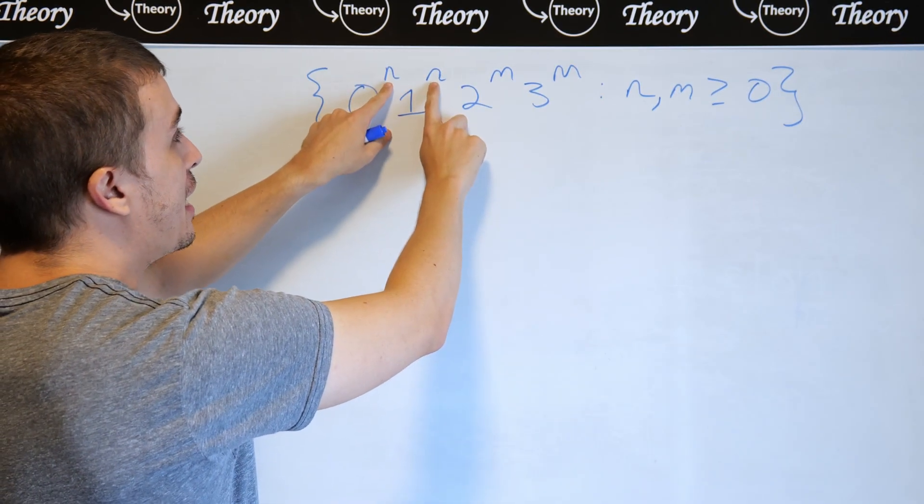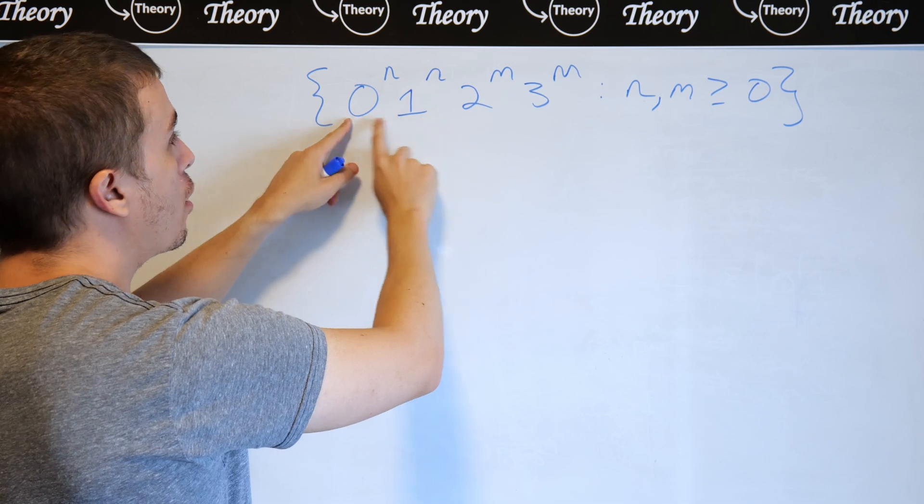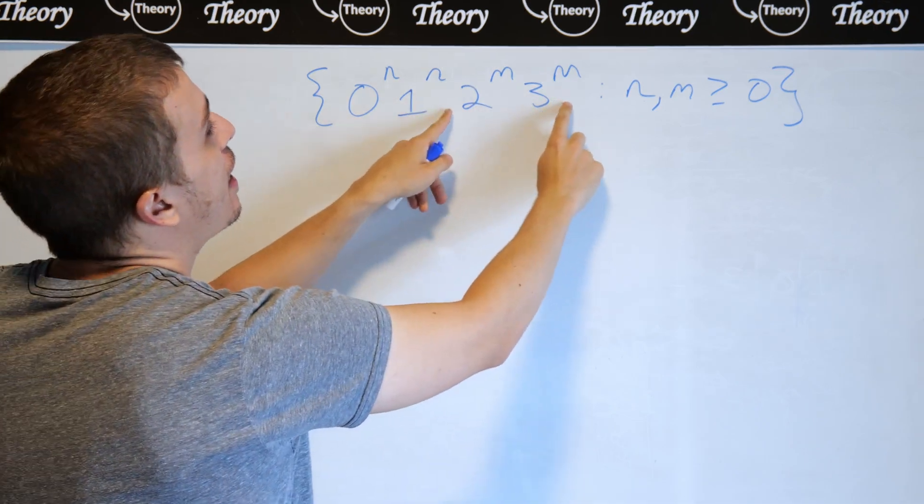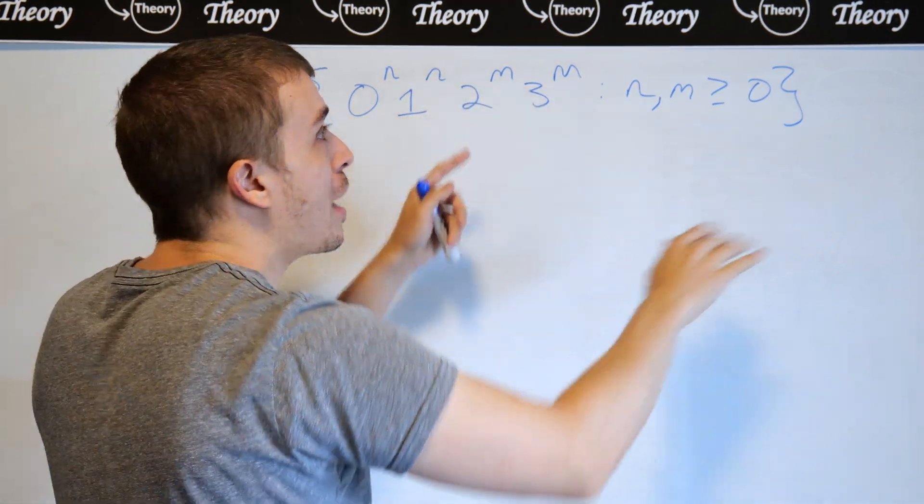Notice that the n's here, corresponding to 0 and 1, are all on the left side, and the m's are on the right side.